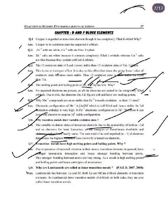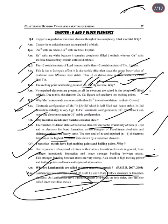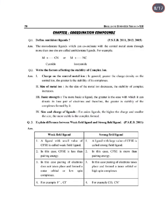Next: Why are lanthanides called inner transition elements? Lanthanides lie between lanthanum and hafnium. Since lanthanum and hafnium are d-block transition elements, and lanthanides have transition metals on both sides, they are also called inner transition elements.